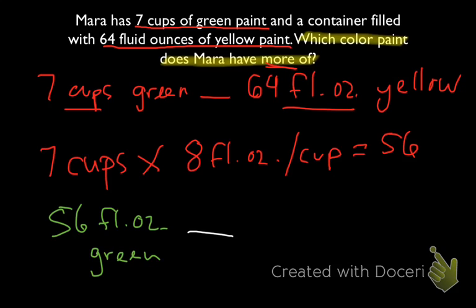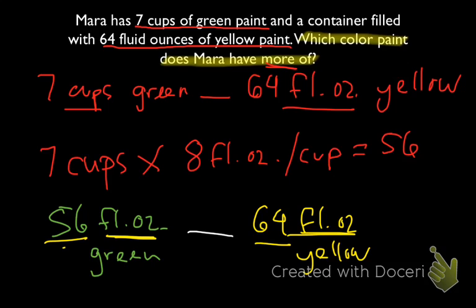We compare that with our original 64. And we see that 56 and 64, the units are now the same. We have fluid ounces in both. 56 is less than 64. So which color paint does Mara have more of? Mara has more of the yellow paint.